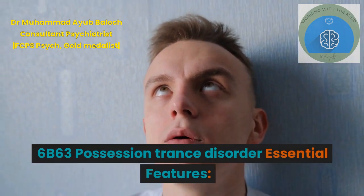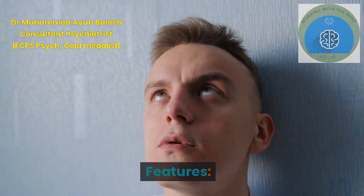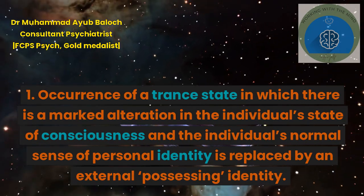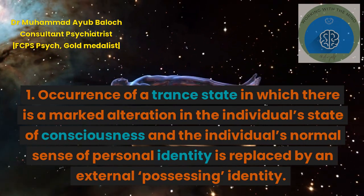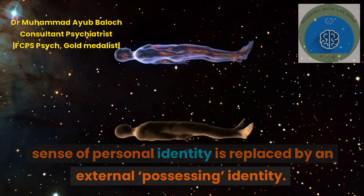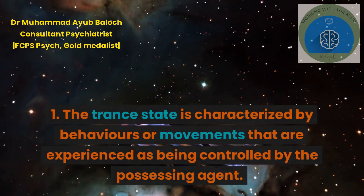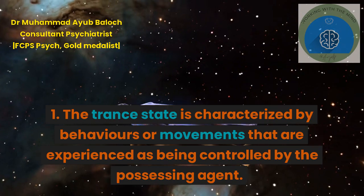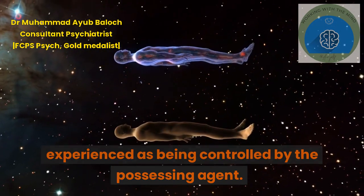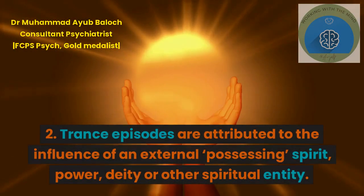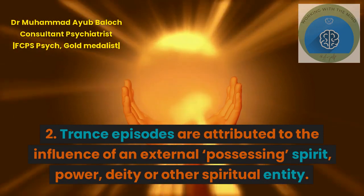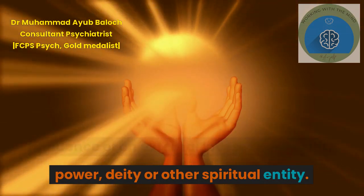6B63 Possession Trance Disorder — Essential Features. 1. Occurrence of a trance state in which there is a marked alteration in the individual's state of consciousness and the individual's normal sense of personal identity is replaced by an external possessing identity. The trance state is characterized by behaviors or movements that are experienced as being controlled by the possessing agent. 2. Trance episodes are attributed to the influence of an external possessing spirit, power, deity or other spiritual entity.